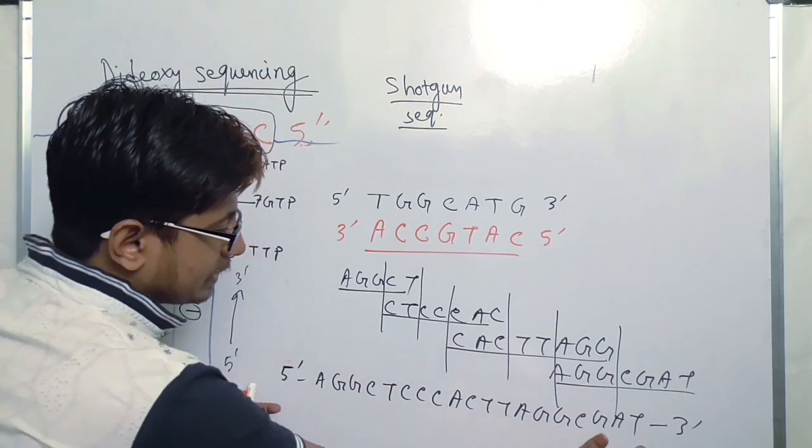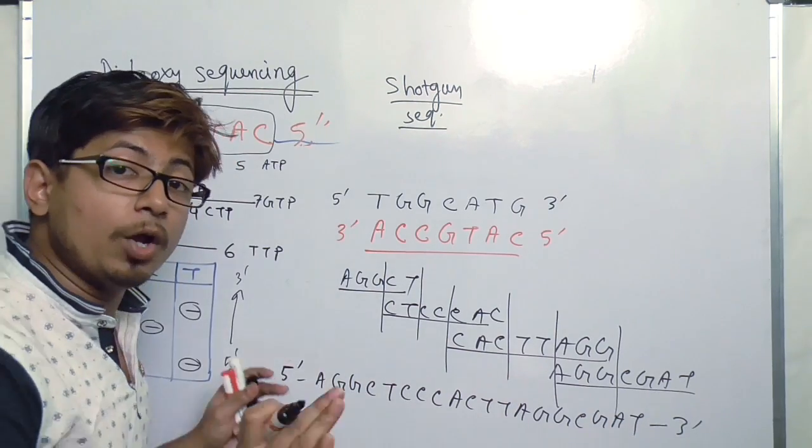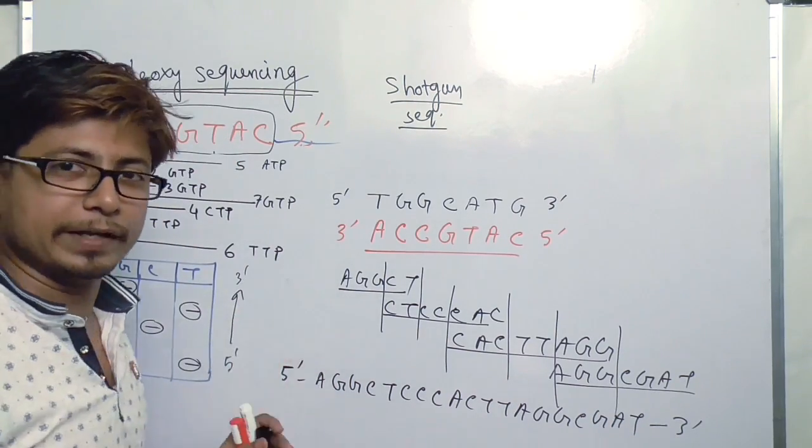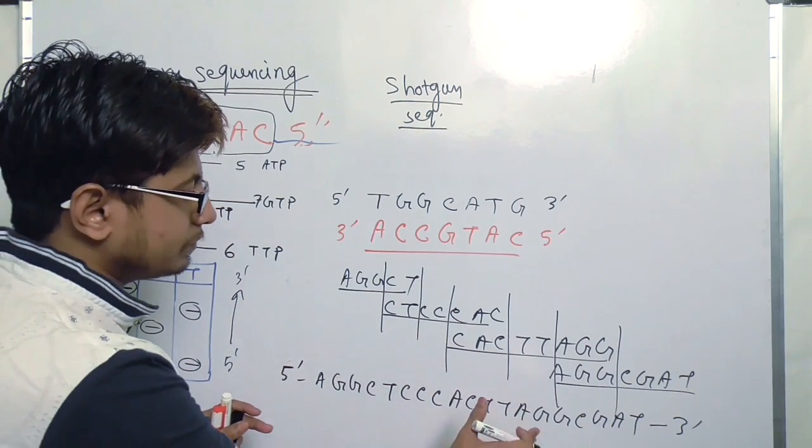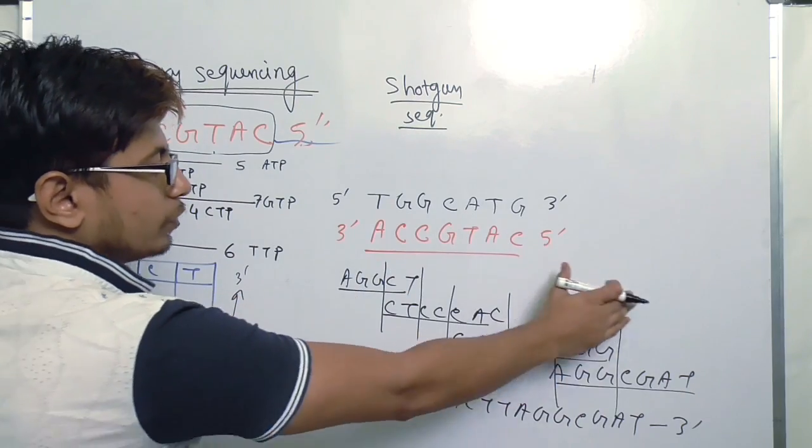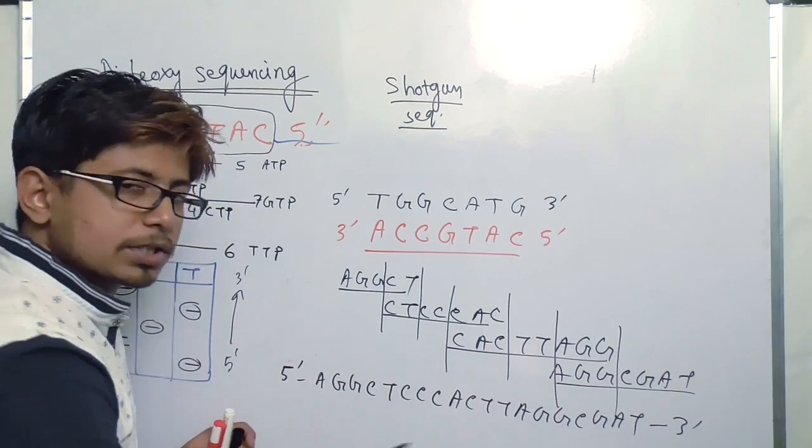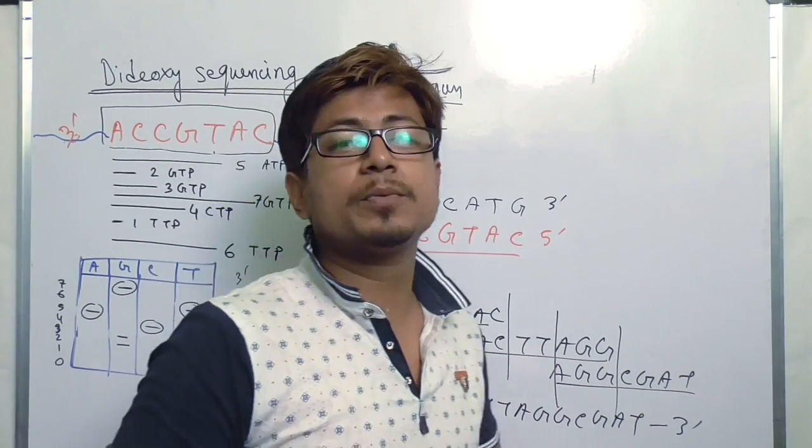So if this is the DNA, we can now sequence this complete DNA along with Sanger method effectively. What we need: we break them down, we separate, sequence them separately, then we put the data to find out the overlapping sequences, and then you compile the data to get the continuous DNA pattern. This is what shotgun sequencing is all about.